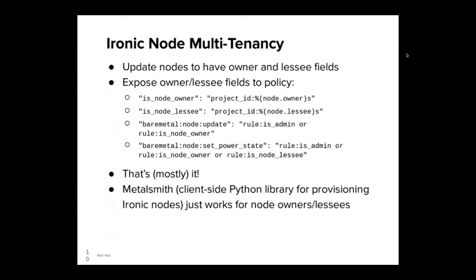Let's go into more detail about the work we did, starting with Ironic node multi-tenancy, which was the key feature we needed above all else. We started by talking with the upstream Ironic team about our requirements, and they were amazing at walking us through our ideas and implementation, helping us refine our spec and giving us feedback about our code. The implementation steps started with adding owner and lessee fields to nodes. Ironic actually already had an owner field for nodes, but it was purely informational. Next, we exposed those owner and lessee fields to policy.